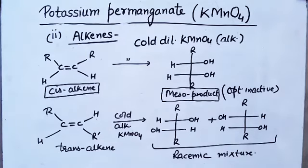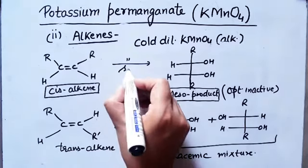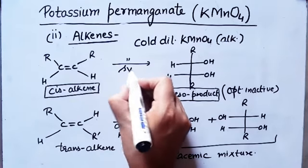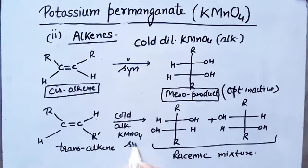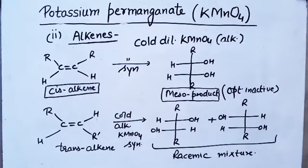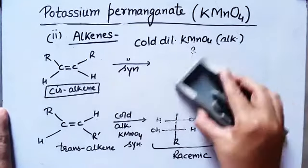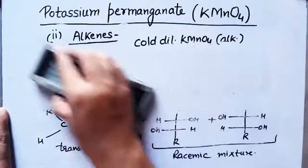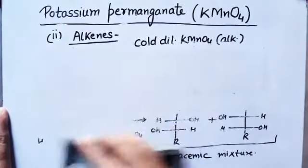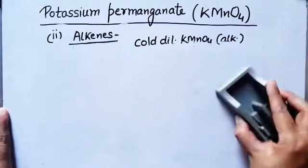Syn addition occurs in both cases. The only difference is the product: cis-alkene gives meso product, and trans-alkene gives racemic mixture. So these were the reactions of alkenes with cold dilute KMnO₄.